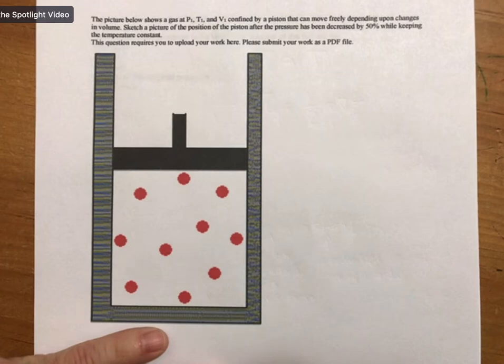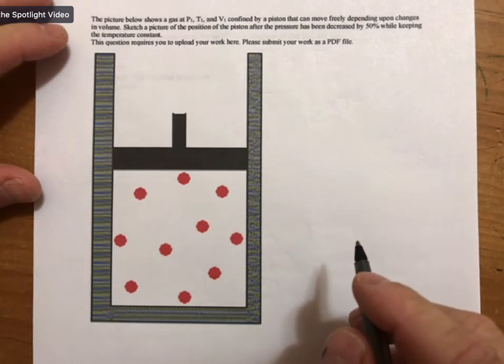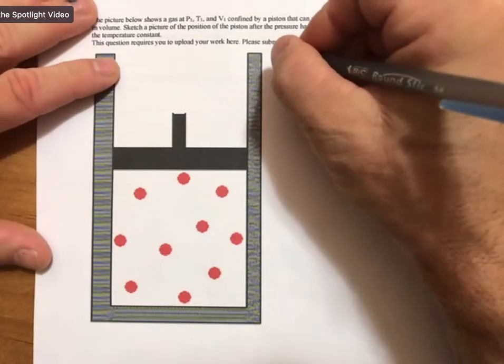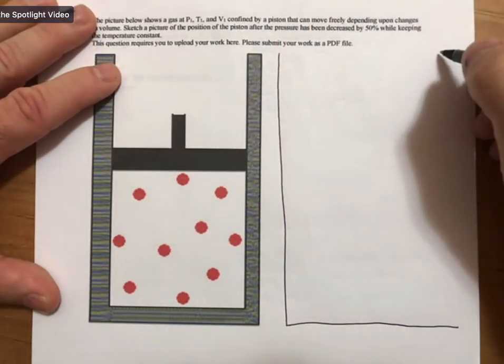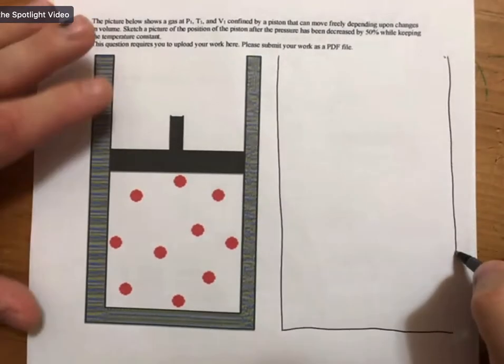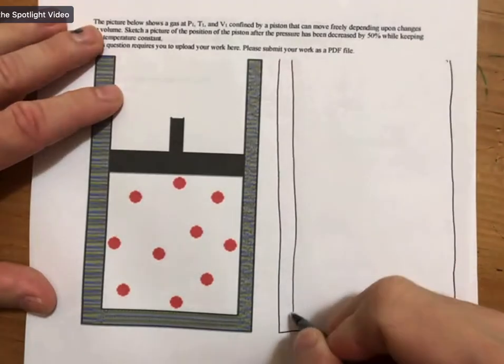So you're going to sketch me a picture and then you're going to upload a PDF file of that picture. And when you do this, so no matter how you print it out, make your drawing of similar size. So if you want to make a smaller drawing, make a smaller printout or just draw it again.